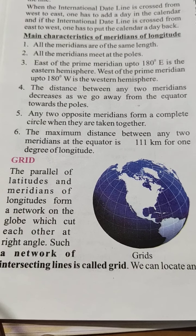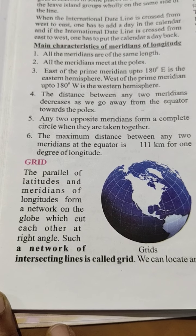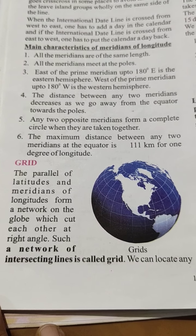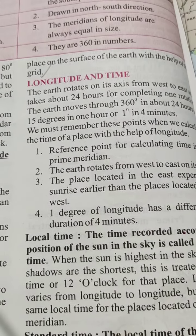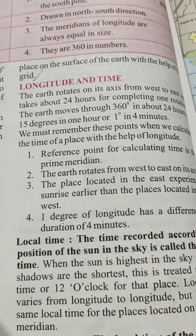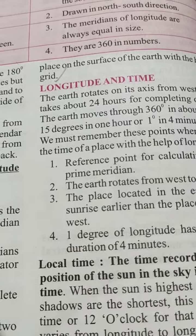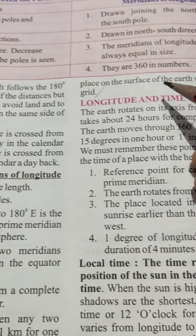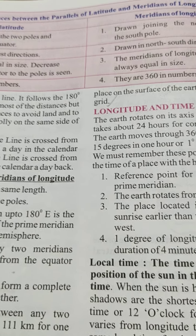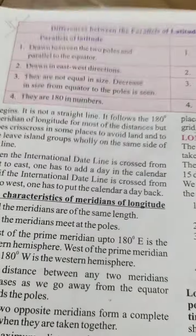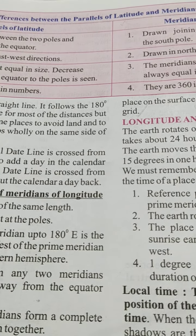Such a network of intersecting lines is called a grid. We can locate any place on the surface of the earth with the help of the grid. Students, read and learn this as homework, and the rest of this part we will discuss in my next video. Bye bye students.